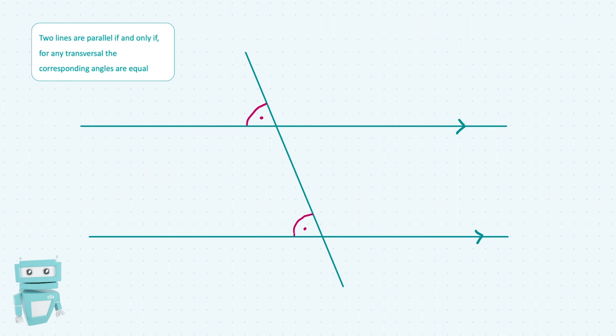We've got one here and another one down here, and these angles are essentially in identical positions along the transversal on two different lines. Because these lines are parallel, we know that the corresponding angles are equal.